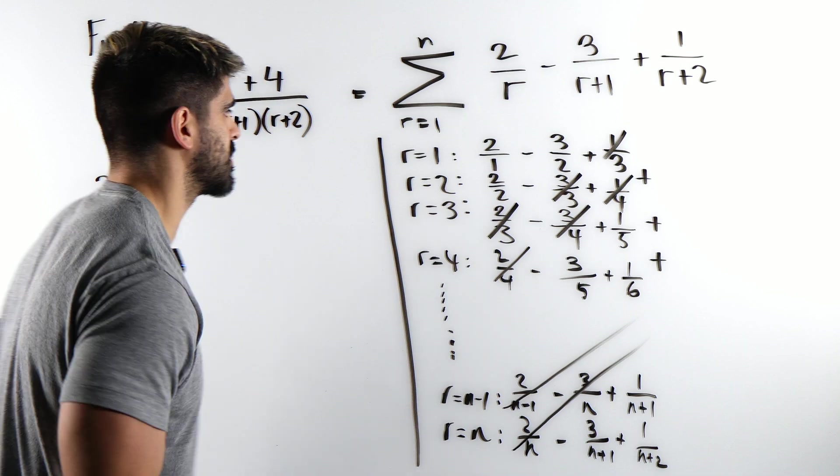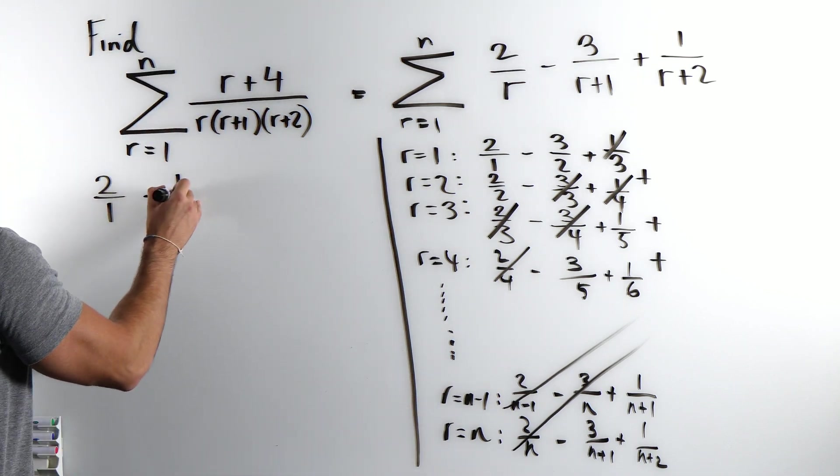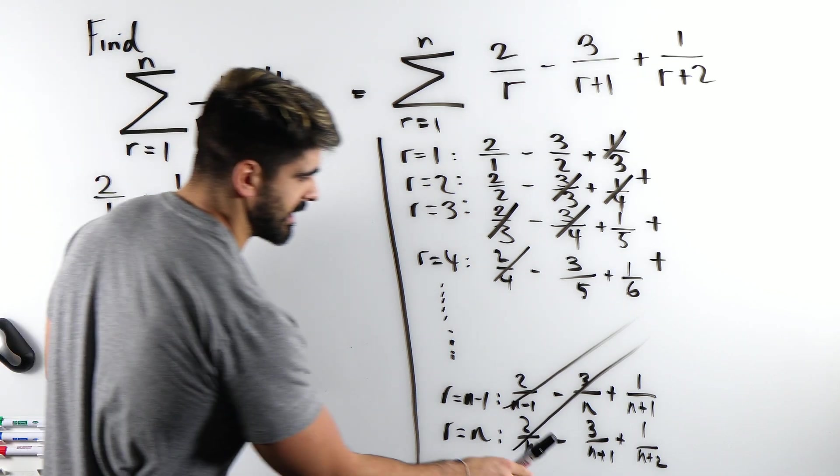Look at the diagonals, 2 over 2 minus 3 over 2 is minus 1 half.